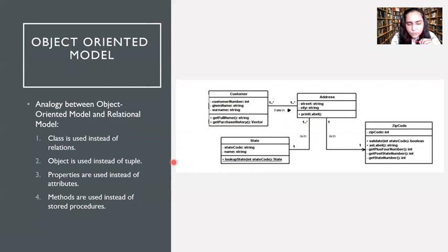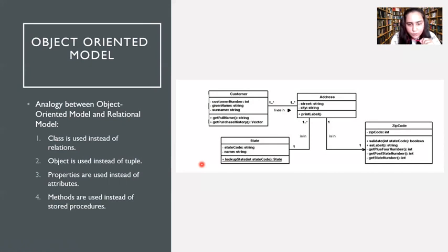If you study any object-oriented programming language, this is the model that is used. The analogy between this model and a relational model is: instead of relations or tables, we use classes; instead of tuples or rows, we use objects; instead of attributes, we use properties; and instead of stored procedures, we use methods. Please check the description box for lecture notes on different types of data models explained in this course. See you in the next video.